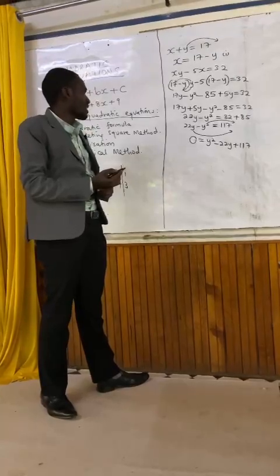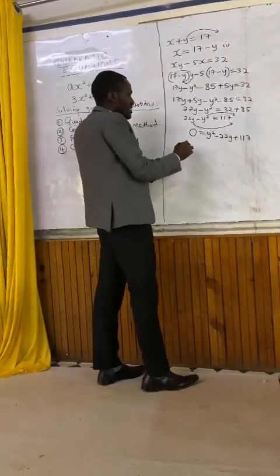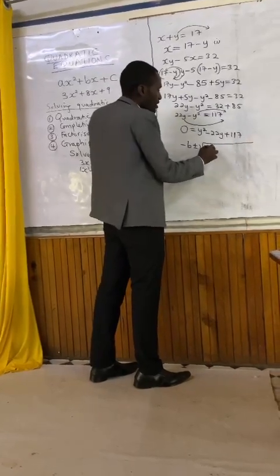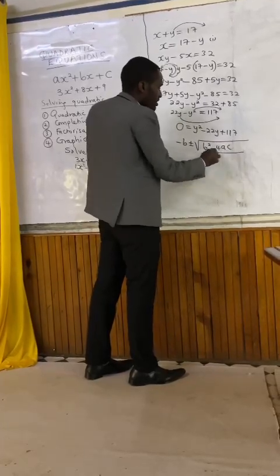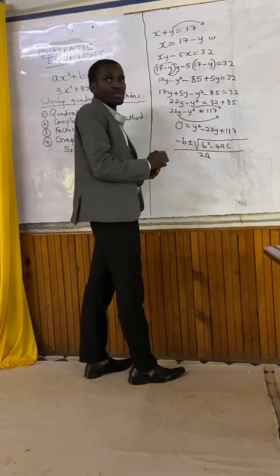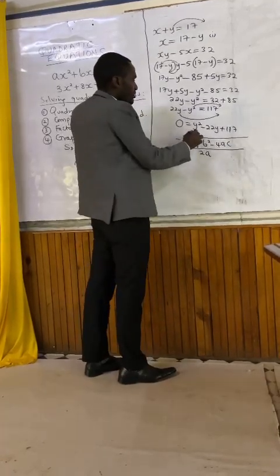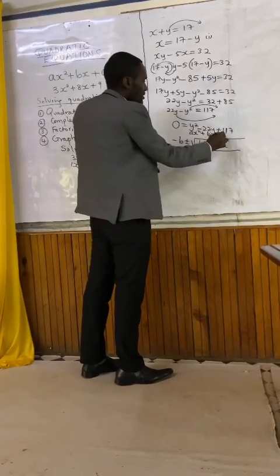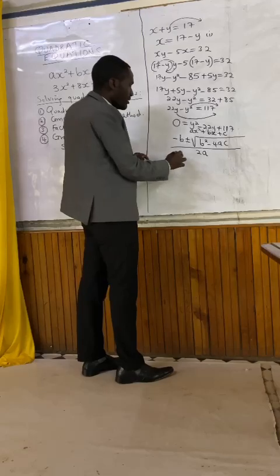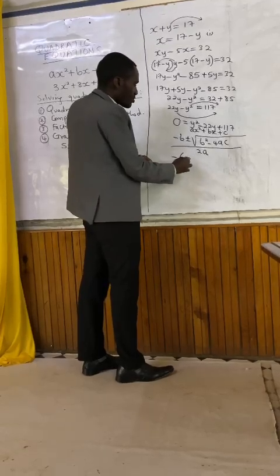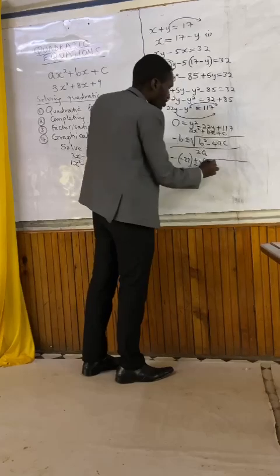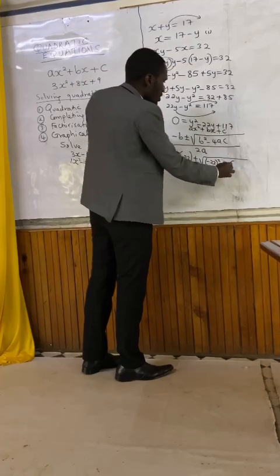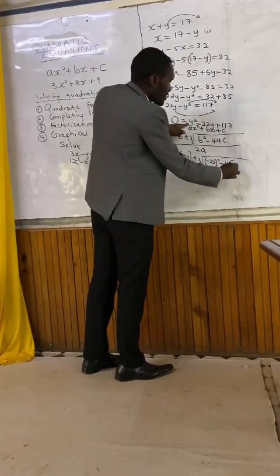Which formula do we use? We can use the quadratic formula: minus b plus or minus the square root of b squared less 4ac, and everything is divided by 2a. The standard form is ax squared plus bx plus c. So what is my b? Negative 22. What is our a? 1. Our c? 170.